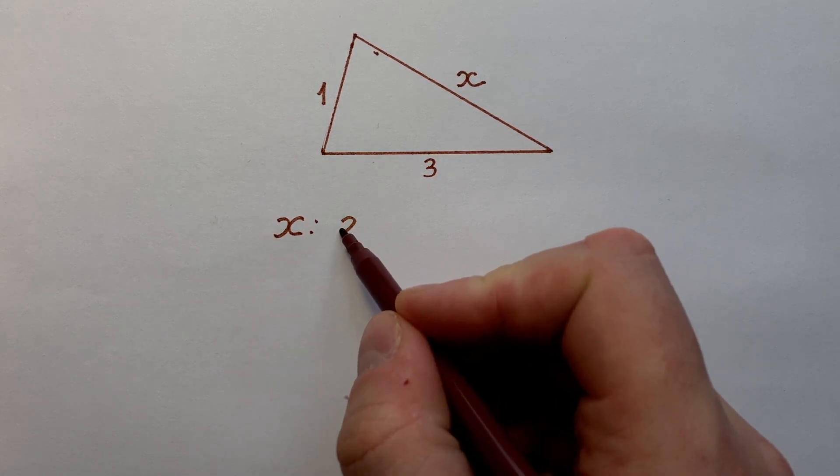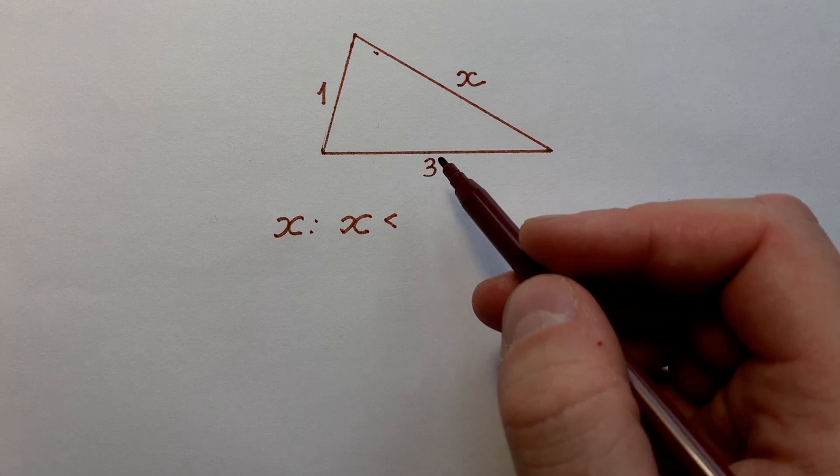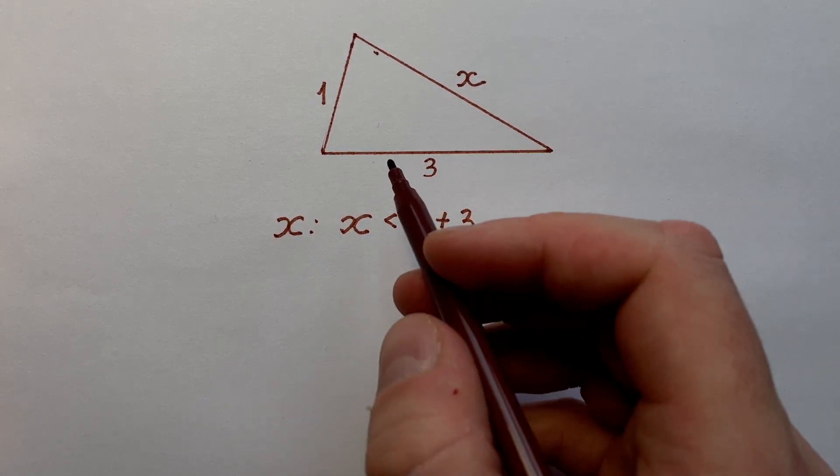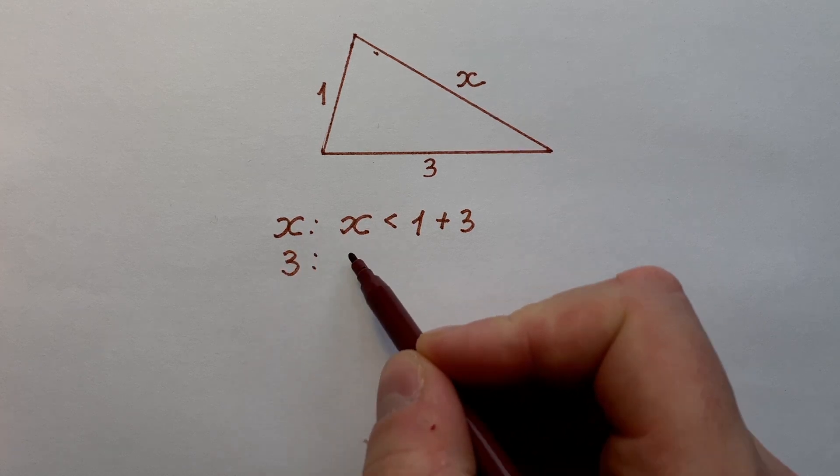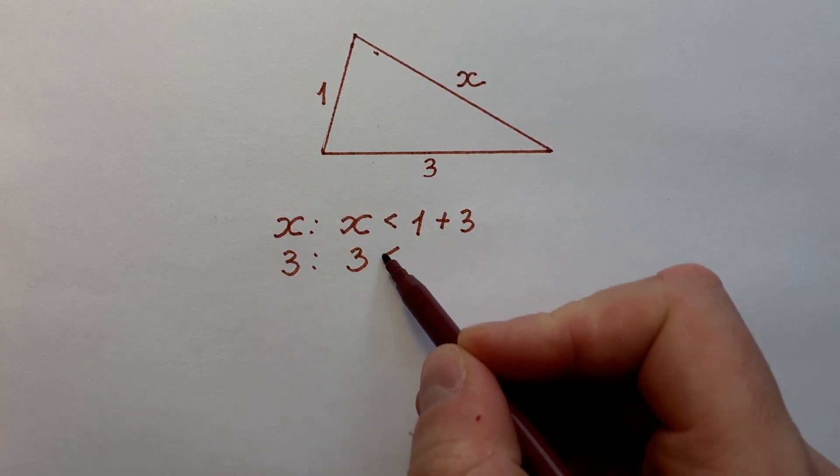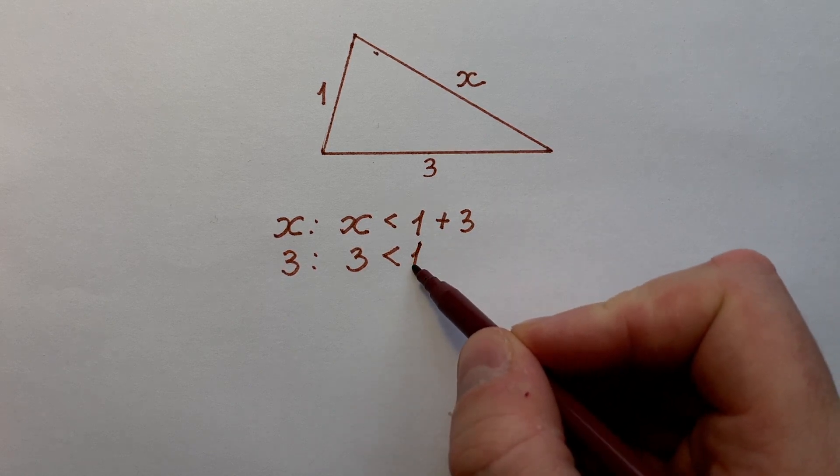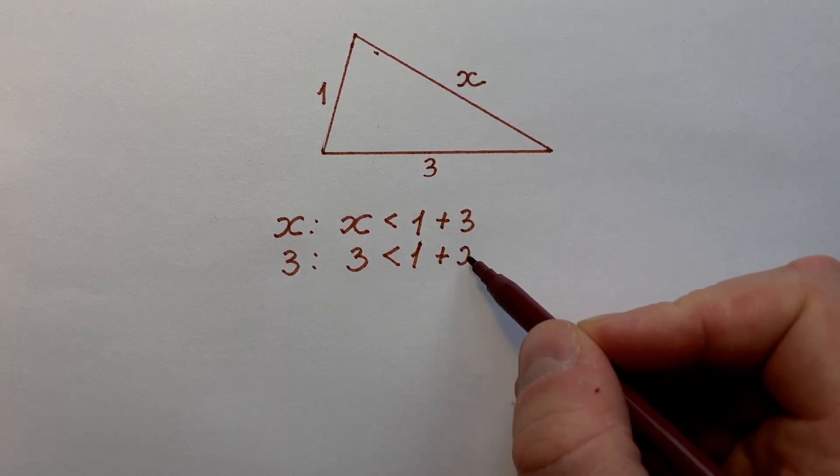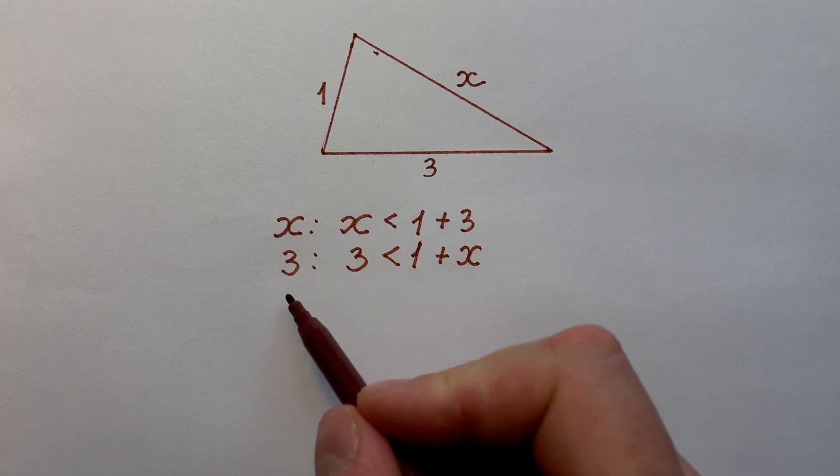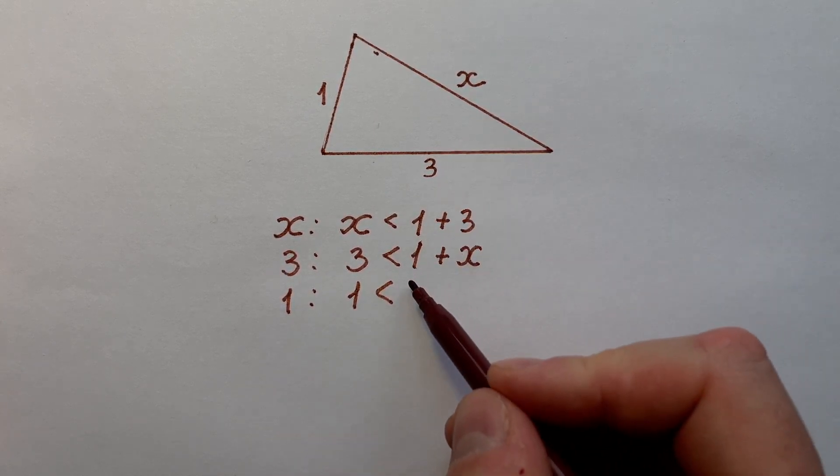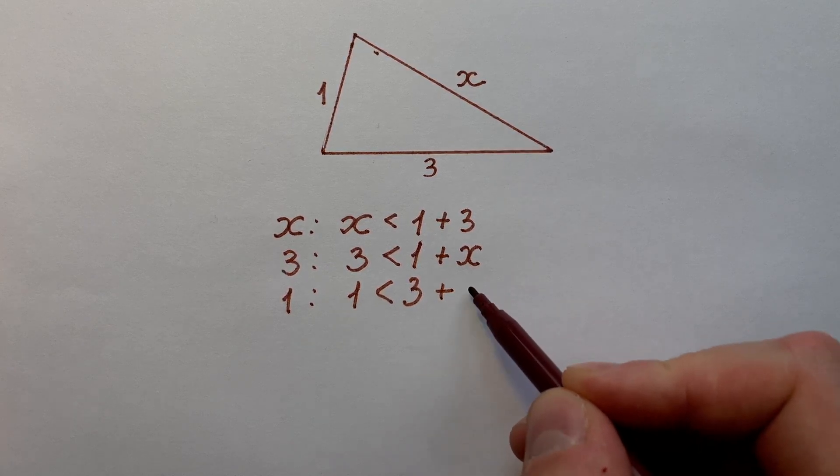For side x we have that x is less than sum of two other sides, 1 plus 3. For side 3, we have that 3 is less than sum of two other sides, 1 plus x. And for side 1, we have that 1 is less than 3 plus x.